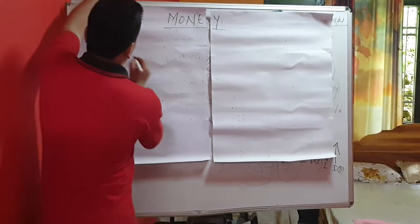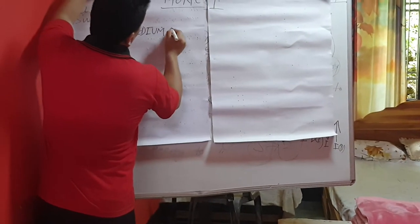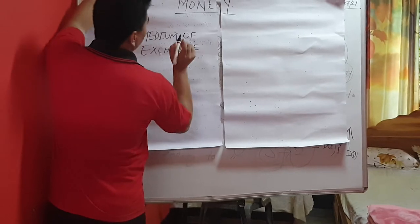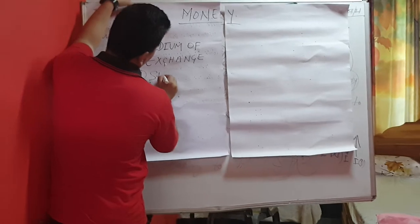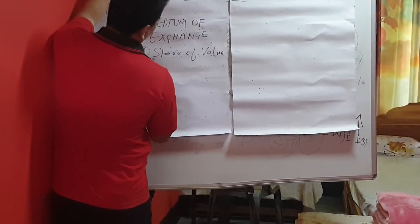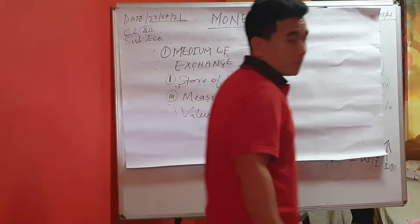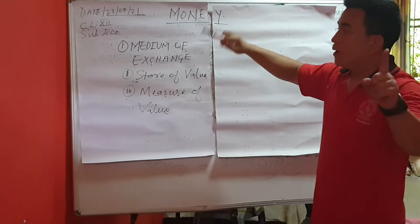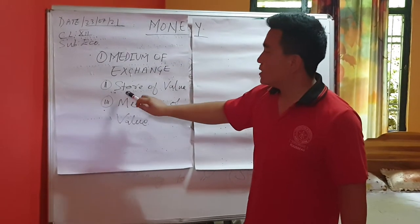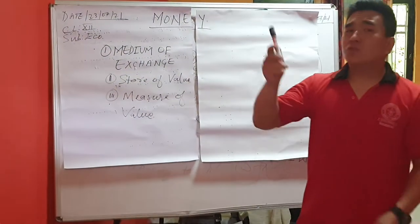Now the first point: money is generally accepted as a medium of exchange. Number one is medium of exchange. At the same time, it also acts as store of value, and it also acts as measure of value. So the definition of money: money is anything which is generally accepted as medium of exchange, and at the same time it acts as store of value as well as measure of value.